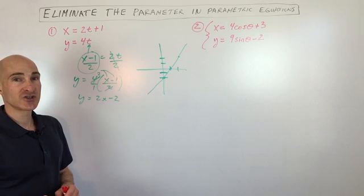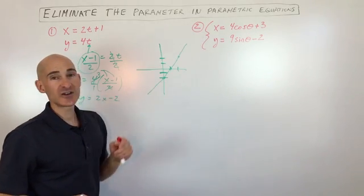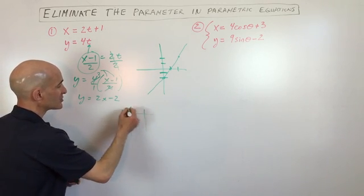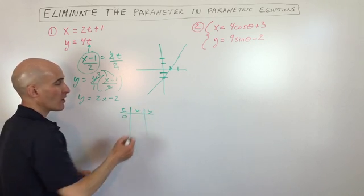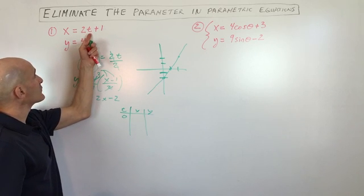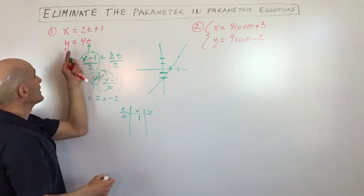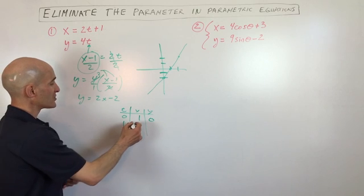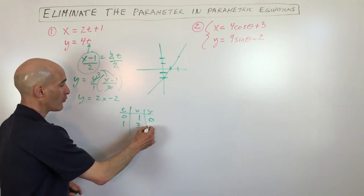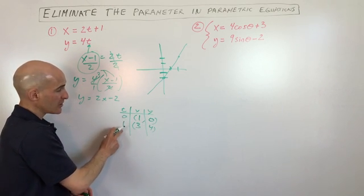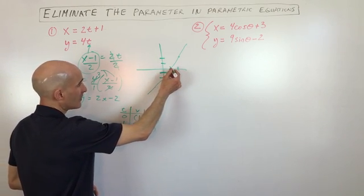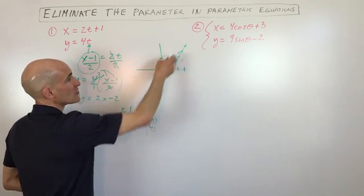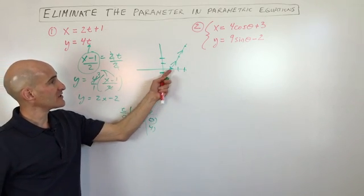The other component to pay attention to is direction — are we going one way or the other as t increases? We can make a quick table. When t equals 0, x equals 1 and y equals 0. When t equals 1, x equals 3 and y equals 4. So as t increases we're moving from (1, 0) to (3, 4), which means we're going in this direction along the line.